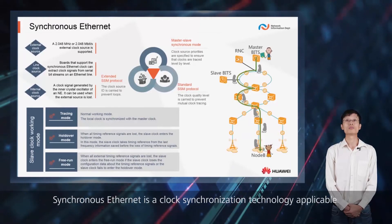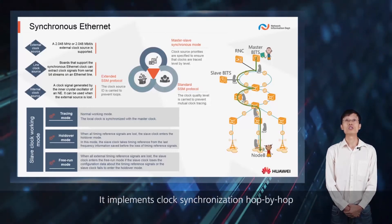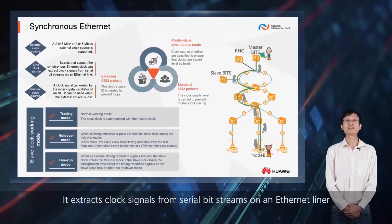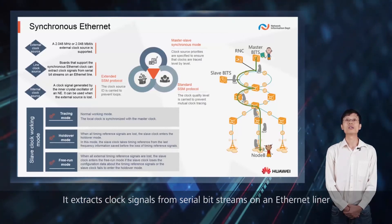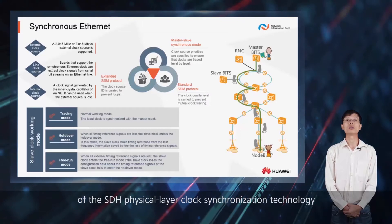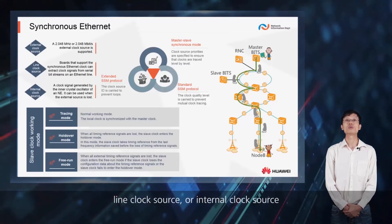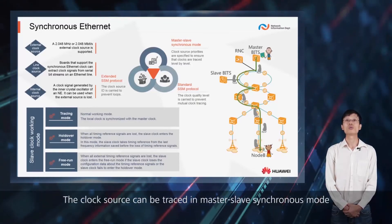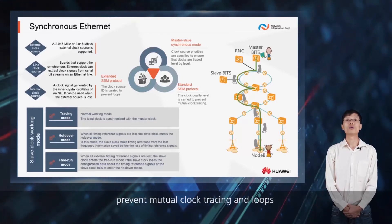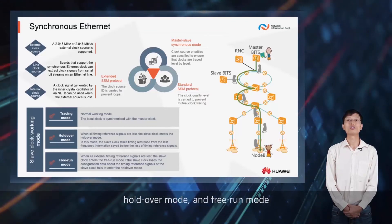Synchronous Ethernet is a clock synchronization technology applicable to packet networks. It implements clock synchronization hop by hop. Synchronous Ethernet is a technology for synchronizing clock frequencies over the Ethernet physical layer. It extracts clock signals from serial bit streams on an Ethernet line. Its working principle is similar to that of the SDH physical layer clock synchronization technology. Clock signals can be extracted from an external clock source, line clock source, or internal clock source. The clock source can be traced in master-slave synchronous mode. Standard and extended SSM protocols are supported to prevent mutual clock tracing and loops. The slave clock working modes include the tracing mode, holdover mode, and free run mode.